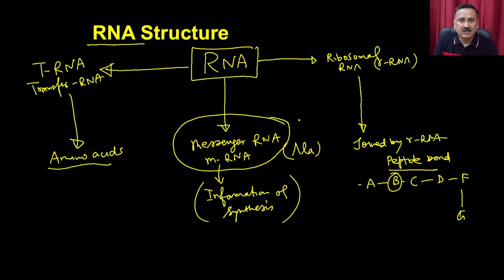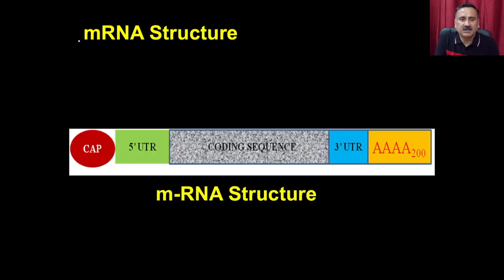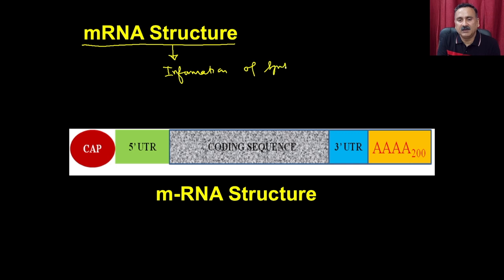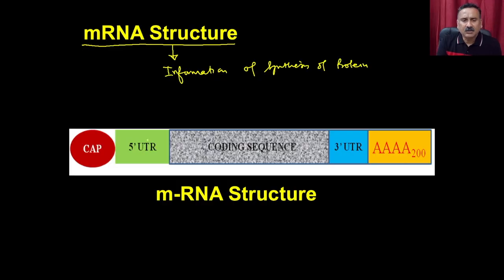We will talk about the structure of messenger RNA. As mentioned, mRNA should have the information of protein synthesis, which it takes from DNA. That information is originally present in DNA, but is then taken up by the messenger RNA. The messenger RNA has three distinct parts, with a 5' end and a 3' end.